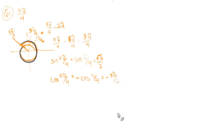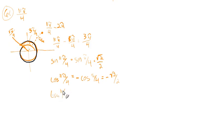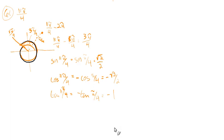The tangent of π over 4 is 1. For 11π over 4, y is positive but x is negative, so we get a negative tangent. The tangent of 11π over 4 is the negative of the tangent of π over 4, which is negative 1. And that's it — they just want the sine, cosine, and tangent.